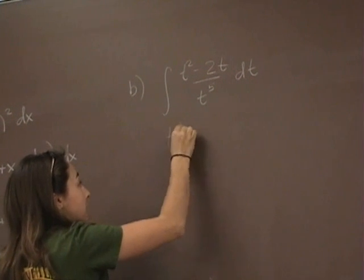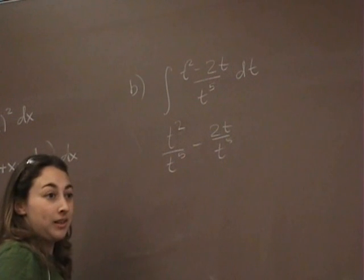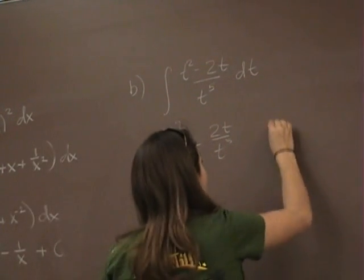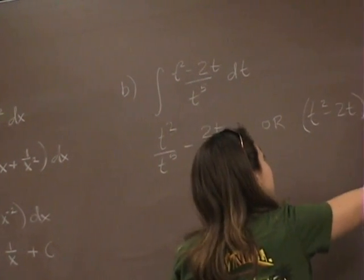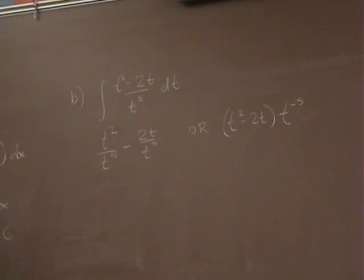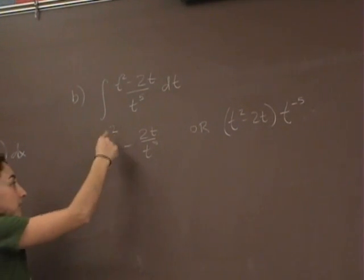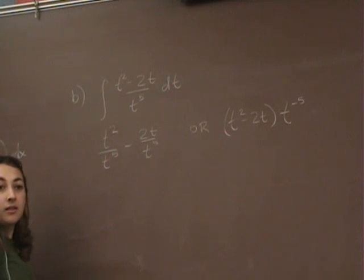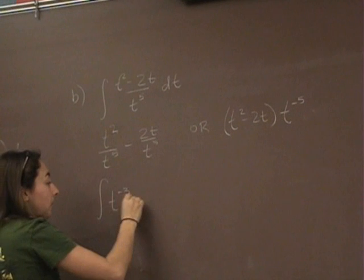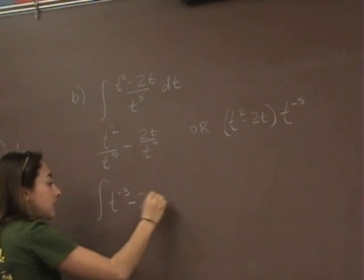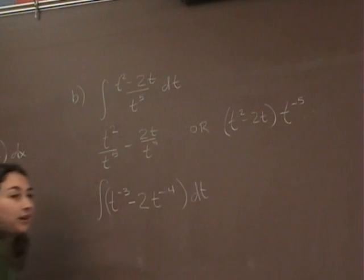So here's how you do it. You can break it up into two fractions: t squared over t to the fifth minus 2t over t to the fifth. Or mentally you could say t squared minus 2t all times t to the negative fifth, not plus or minus. When you simplify, t squared over t to the fifth, what do you get? t to the negative third, minus 2t to the negative fourth.